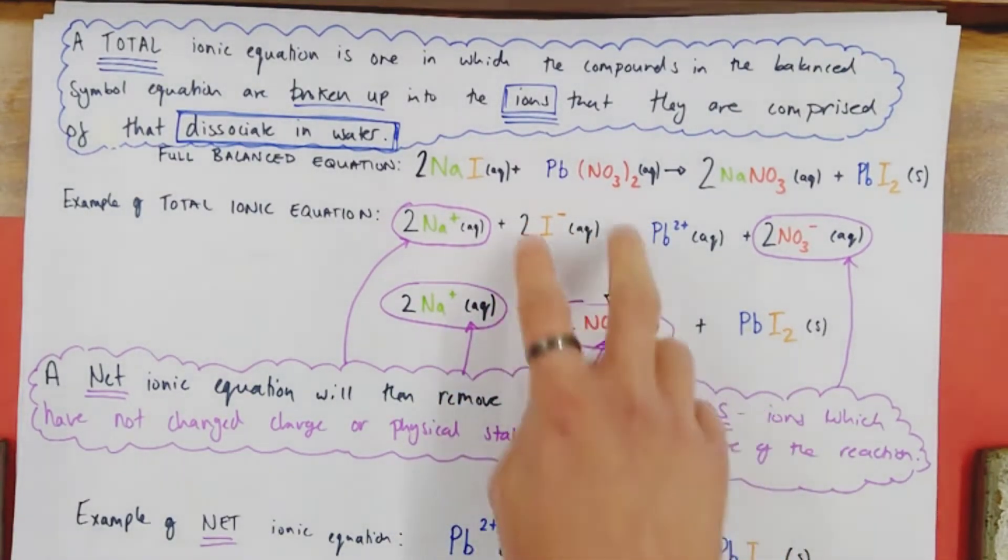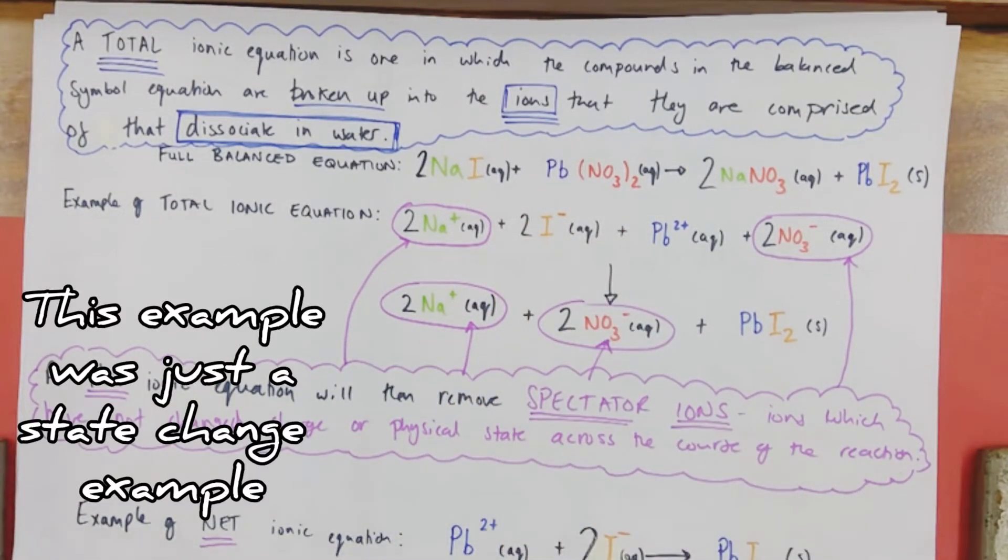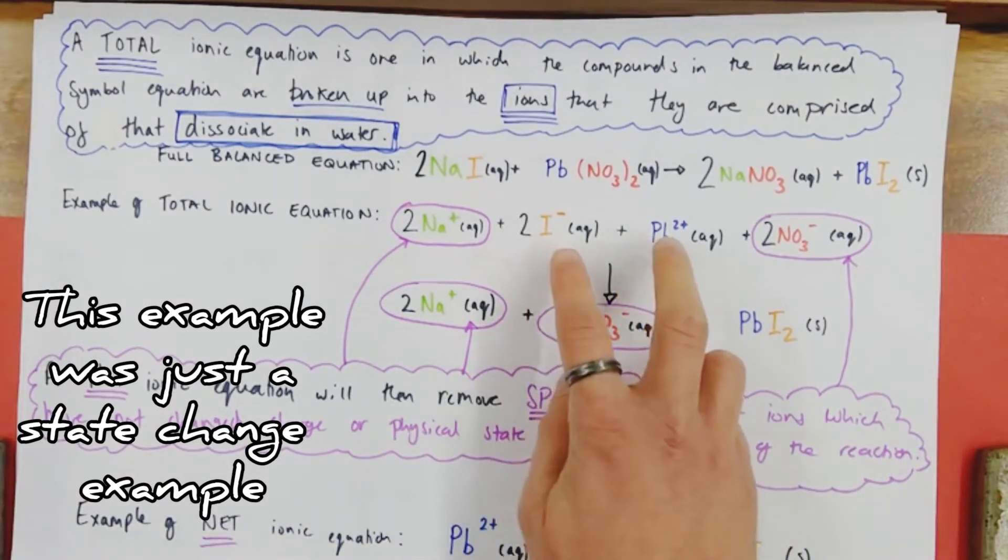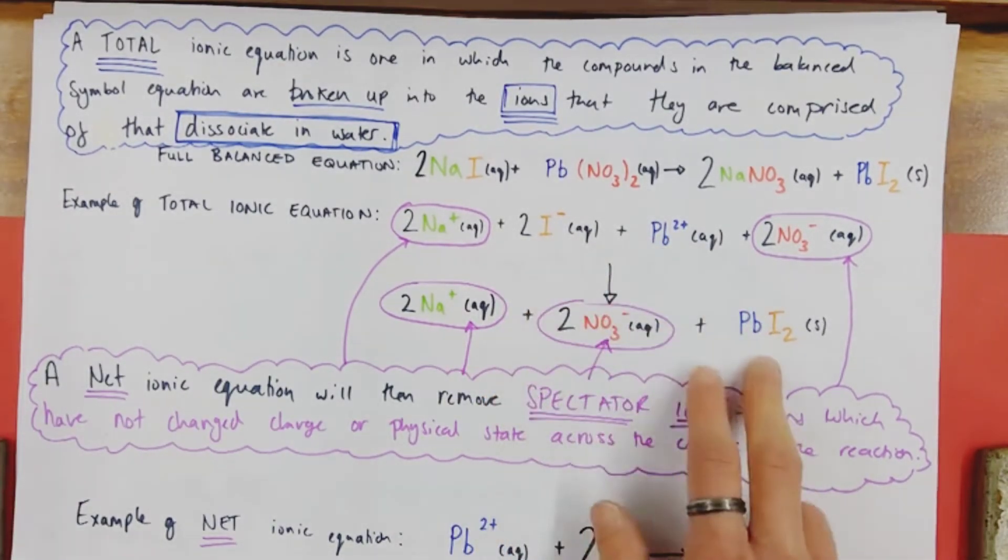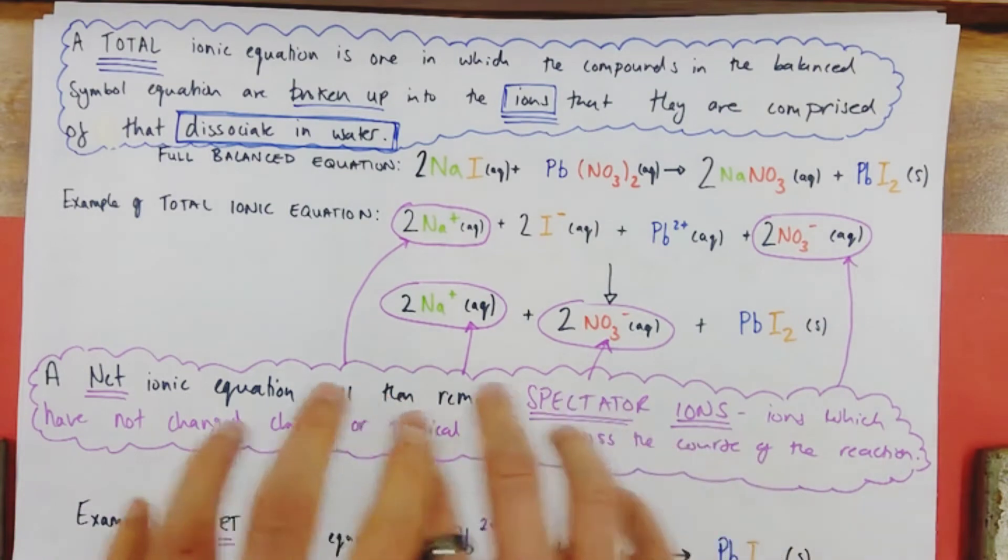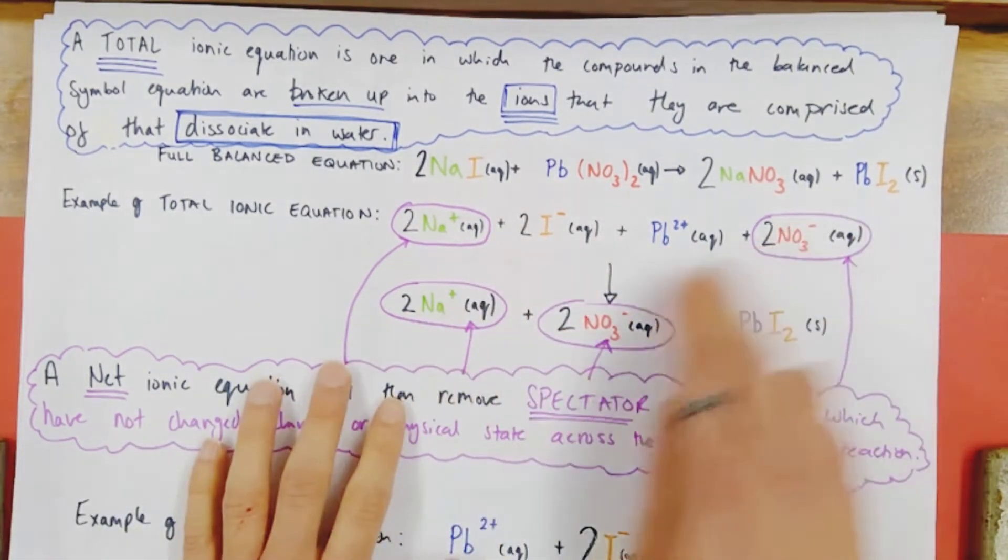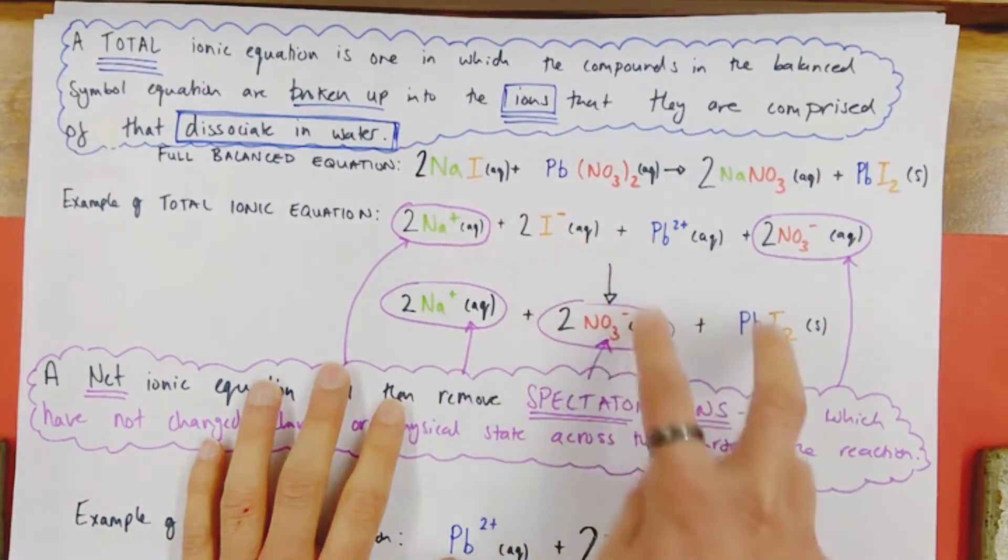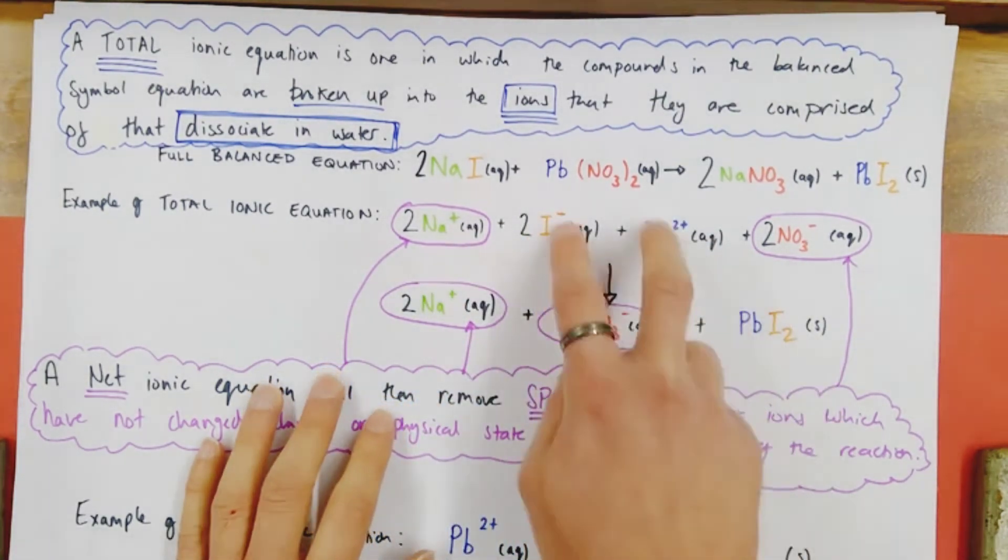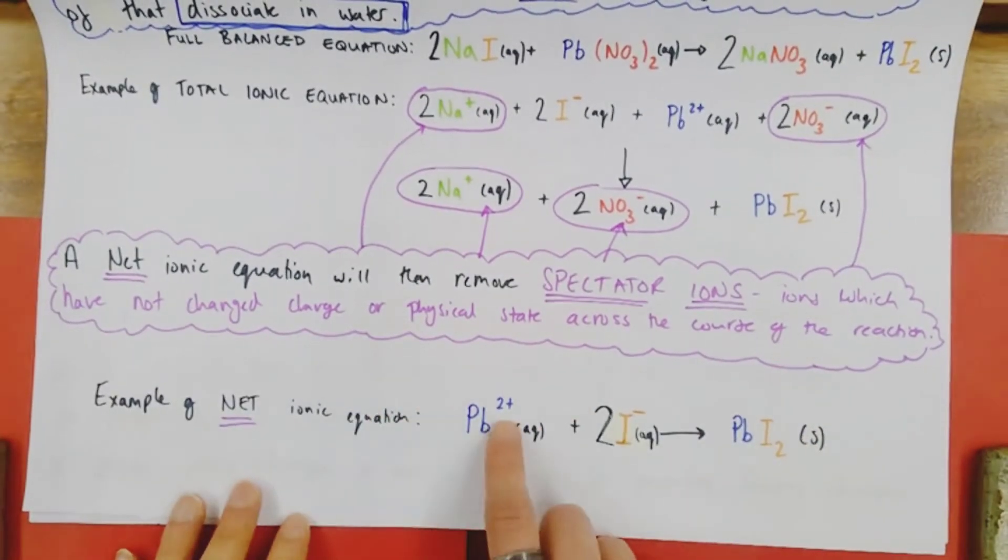So it looks like the only ones really getting involved in a redox reaction but also in a change of state is the lead ions and the iodide ions reacting to form lead iodide. So my net ionic equation focuses on these non-spectator ions. So I cancel out all the spectator ions. I'm just left with the ions of interest, which are forming my insoluble product. So here is my example of a net ionic equation, lead 2+ aqueous ions reacting with two iodide ions, aqueous again to form my lead iodide compound, which is insoluble.